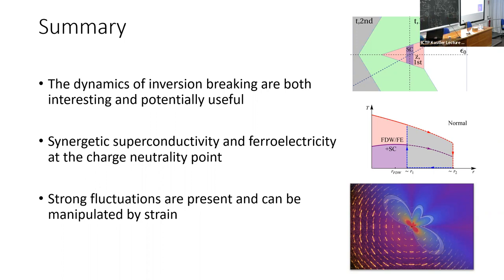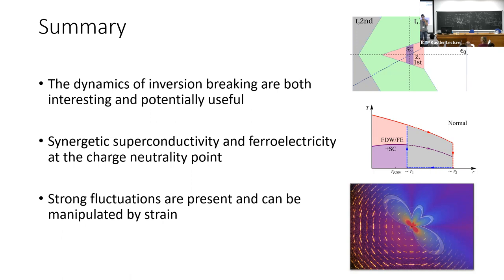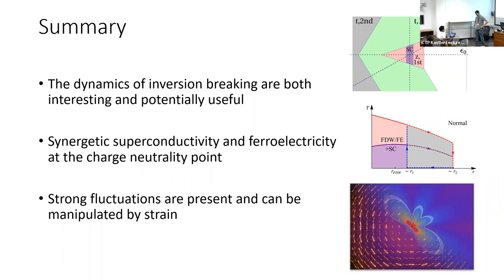There is a question from Andrea Chubukov: does the fermion self-energy going as omega log omega appear only when the mass of the t-boson is tuned to zero? No — there's a crossover. It's purely omega log omega at the critical point, and then with some finite distance there'll be a crossover scale at the lowest frequencies where it's a Fermi liquid, and at higher frequencies it's omega log omega.